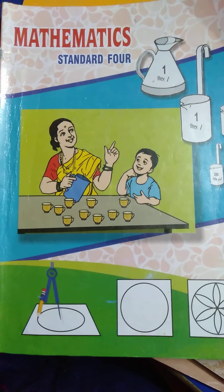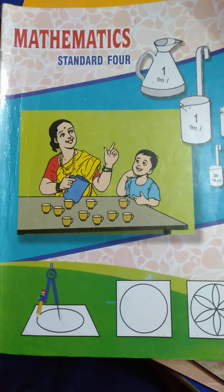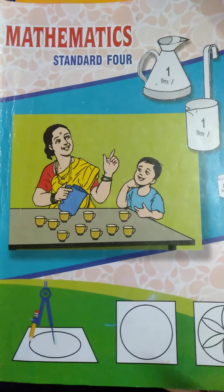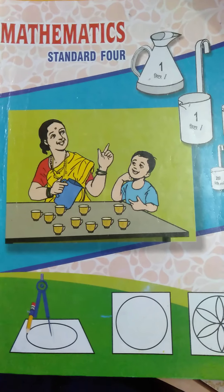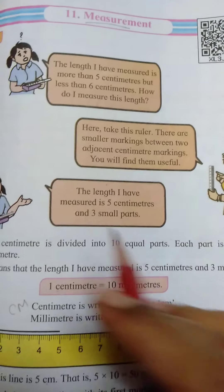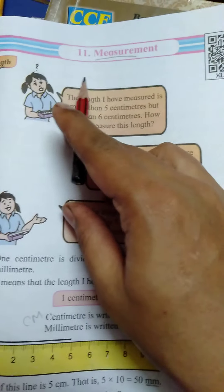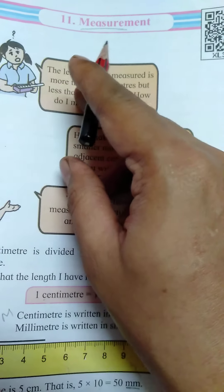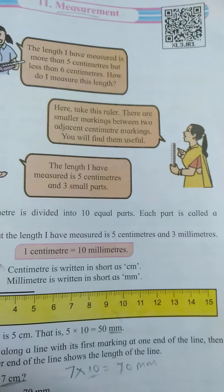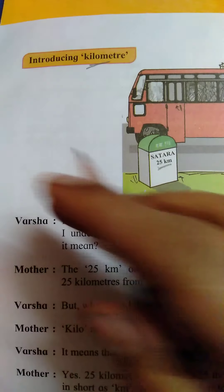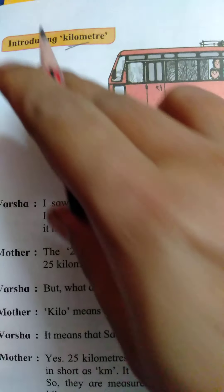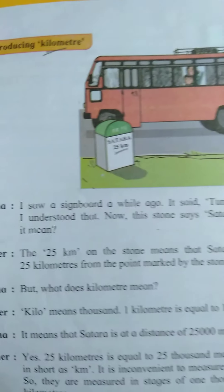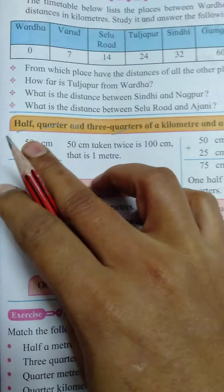Myself Mrs. Nitra Kalia, maths teacher from Belkin National School. We are starting mathematics for standard 4. Students, today we are continuing our measurement chapter — lesson number 11, measurement. Yesterday we learned about kilometres, today we will learn about half, quarter, and three-quarter of a kilometre and a metre.